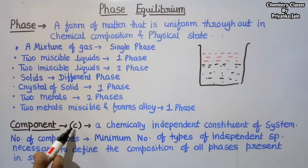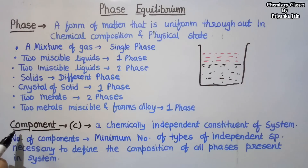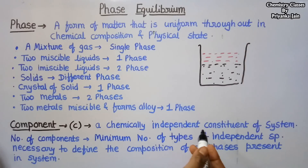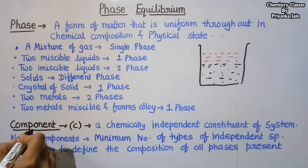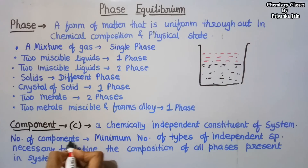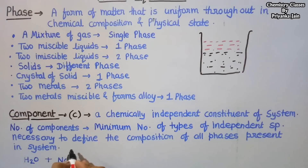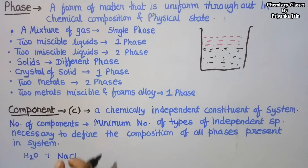Phase is denoted by P and the component is denoted by C. What is a component? A chemically independent constituent of the system is called the component — it has a chemical identification. The number of components is given by the minimum number of independent species that are necessary to define the composition of all the phases present in the system. We do not take all chemical species; we take only the minimum number of independent species.